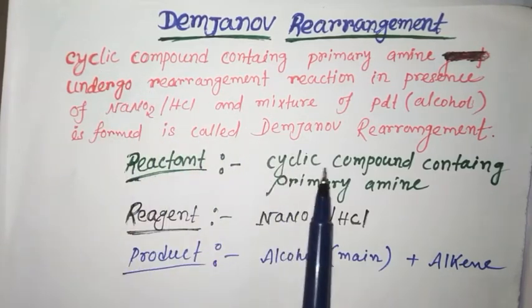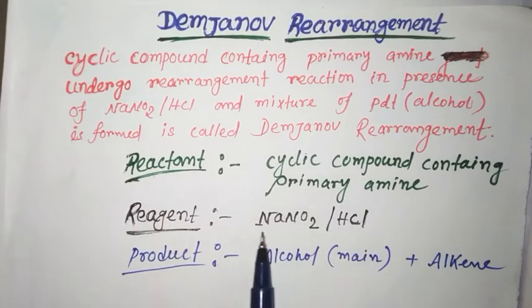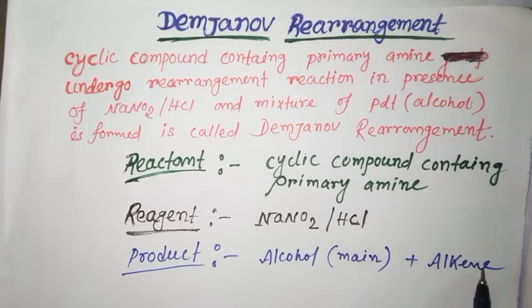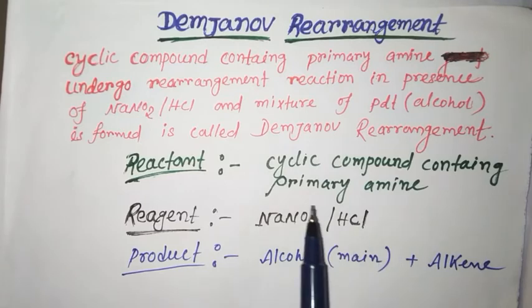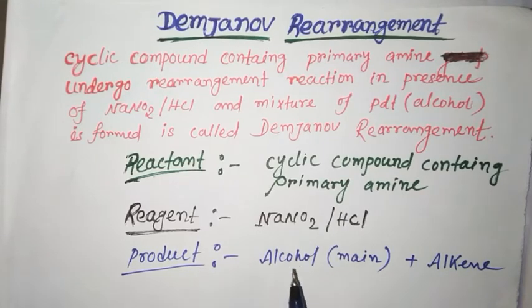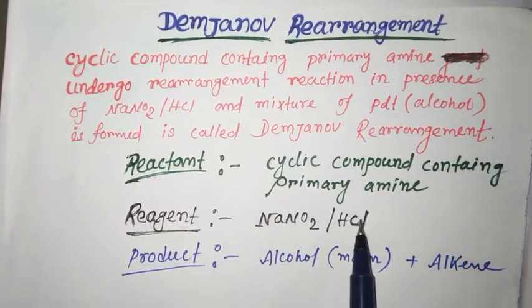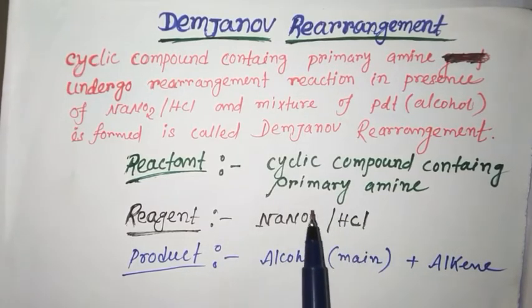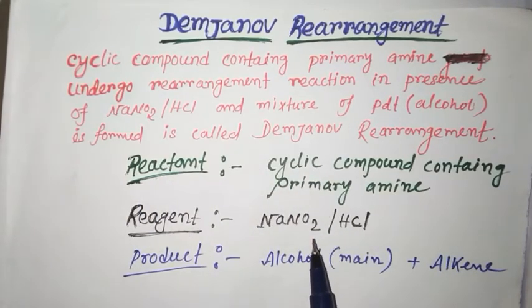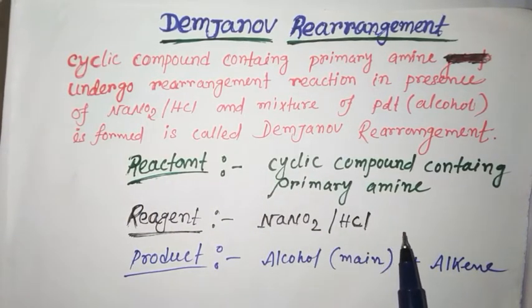The reactant is cyclic compound containing primary amine, reagent is NaNO2HCl, and product is alcohol as the main product and alkene as the side product. This is the overall Demjanov rearrangement reaction.